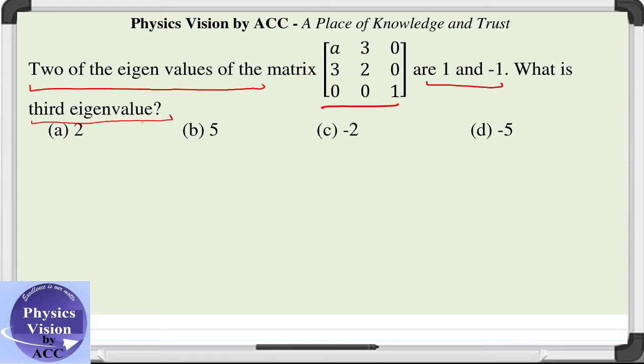It's a very good question because there is also one matrix element which is missing from the matrix, otherwise it becomes very easy. Now let us use the properties of eigenvalues.